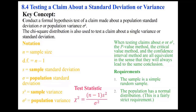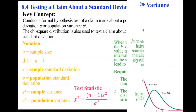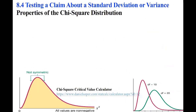The requirements are: the sample is a simple random sample, and the population has a normal distribution. The chi-square distribution is not symmetric — it is skewed to the right, starts from zero, and goes indefinitely to the right.